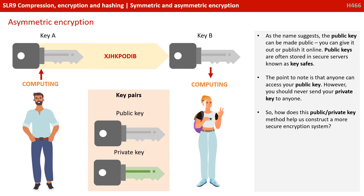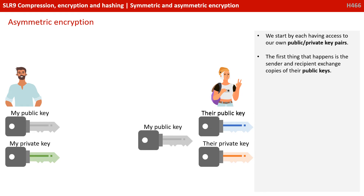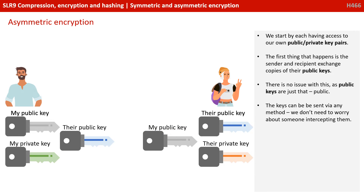How does this public-private key method actually help us construct a more secure encryption system? We start by each person having access to their own public-private key pairs, as shown here. The first thing that happens is the sender and recipient exchange copies of their public keys. There's no issue with this, of course, as the public keys are just that — they are public. The keys can be sent via any method; you can literally email them to each other.